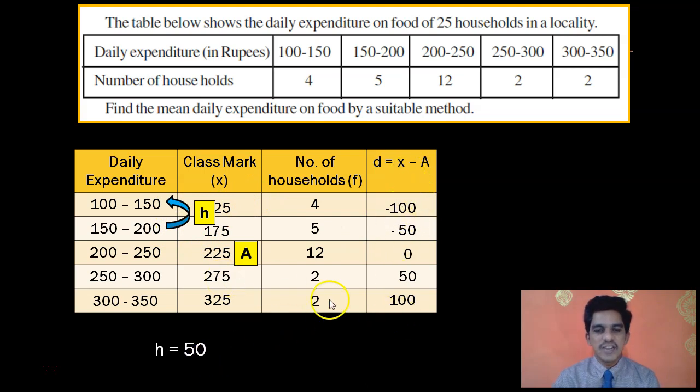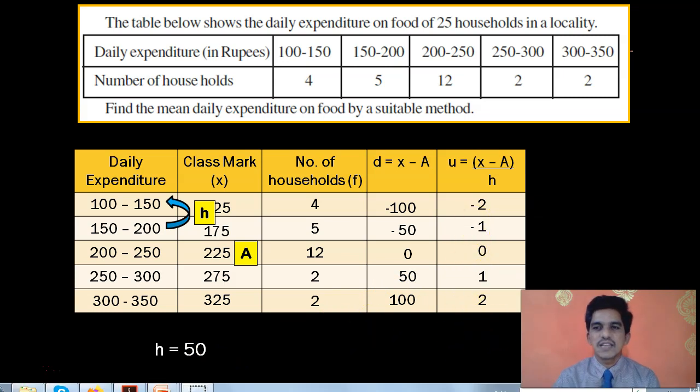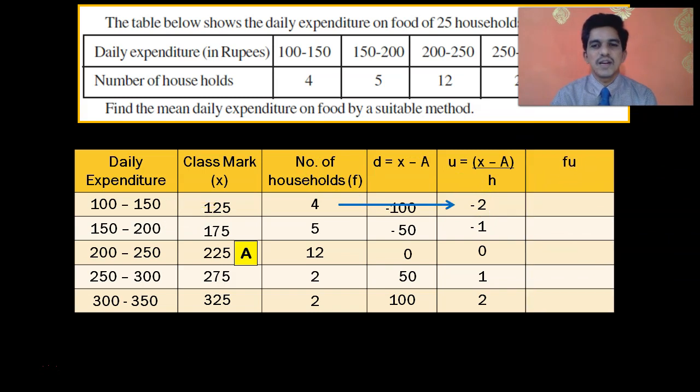Now, you have to calculate D which is x minus A. If you put the values, 125 minus 225 is minus 100, 175 minus 225 is minus 50, 225 minus 225 is 0, 275 minus 225 is 50, and finally, 325 minus 225 is 100. These are the deviations. Next, u is x minus A divided by h. Minus 100 by 50 gives minus 2. Minus 50 by 50 is minus 1. 0 by 50 is 0. 50 by 50 is 1. 100 by 50 is 2.